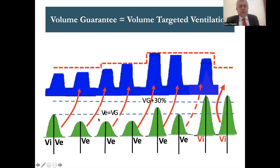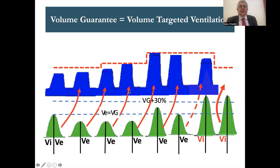We compare the volume expired to the target volume. If the expired volume equals the target, the next pressure will be the same as the previous one. If the volume produced was below the target, there will be an order for the PIP of the next breath to go up, but it cannot exceed the PIP max. The PIP max is set 3 to 5 above the PIP measured on the patient for safety. When we reach the PIP max, we cannot increase the volume further unless the clinician increases the PIP max.